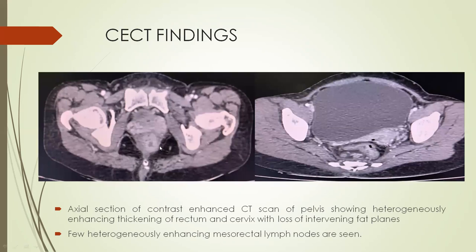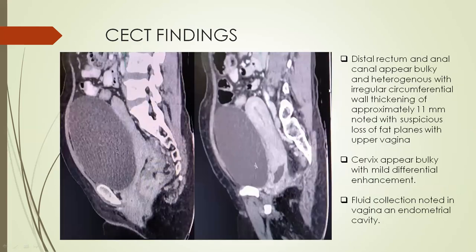CECT findings: Axial sections of contrast-enhanced CT of the pelvis showing heterogeneous enhancing thickening of both rectum and cervix with suspicious loss of fat planes between cervix and rectum. On sagittal sections, the distal rectum and anal canal appear bulky and heterogeneous with circumferential wall thickening of approximately 11 mm noted, with suspicious loss of fat planes with the upper vagina. Cervix appears bulky with mild differential enhancement and fluid collection in the cervical canal, and fluid is also noted in the endometrial cavity.